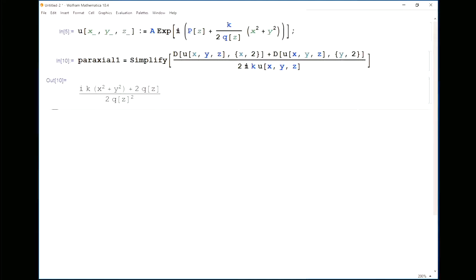The second term was related to the first order derivative of u with respect to z. So defining a paraxial 2 here. This was 2i k times the derivative of u once with respect to z. That's how I get these derivatives.